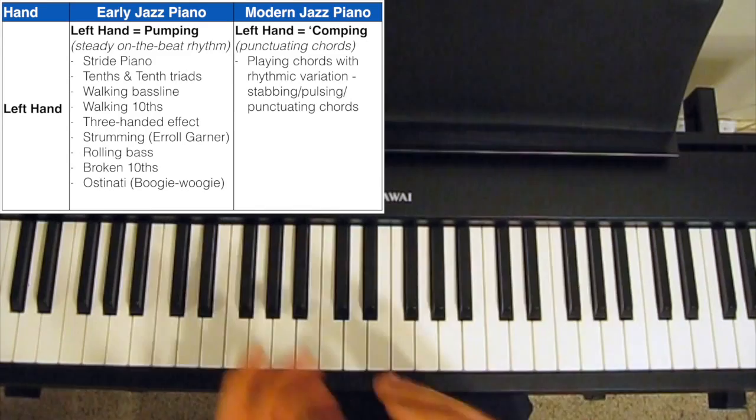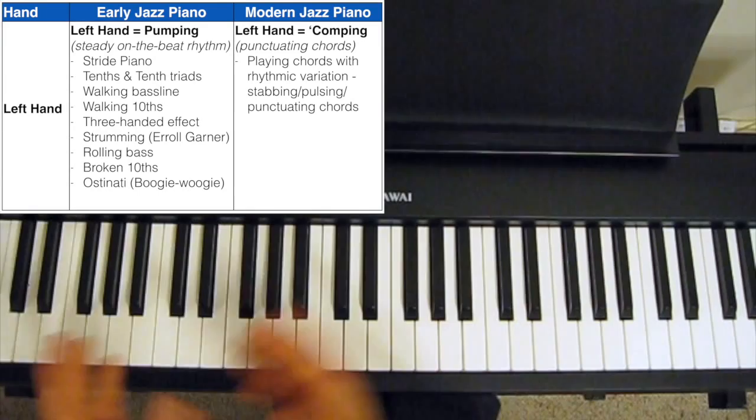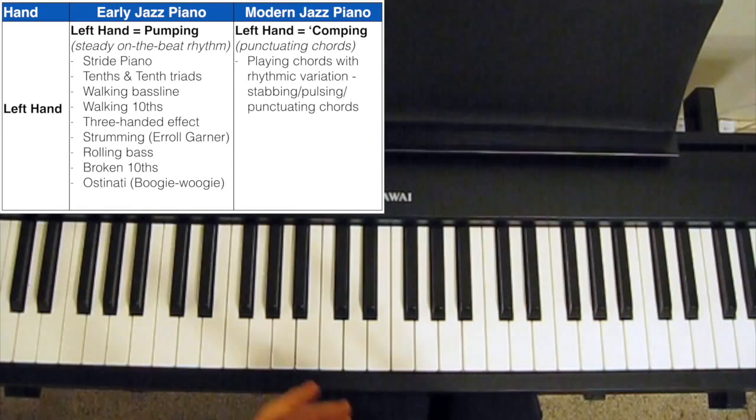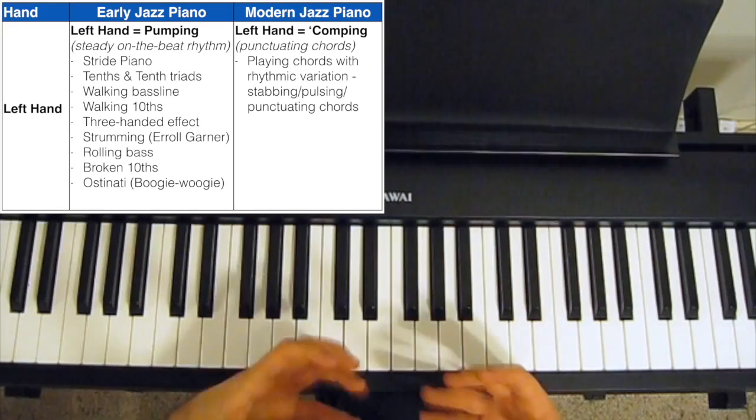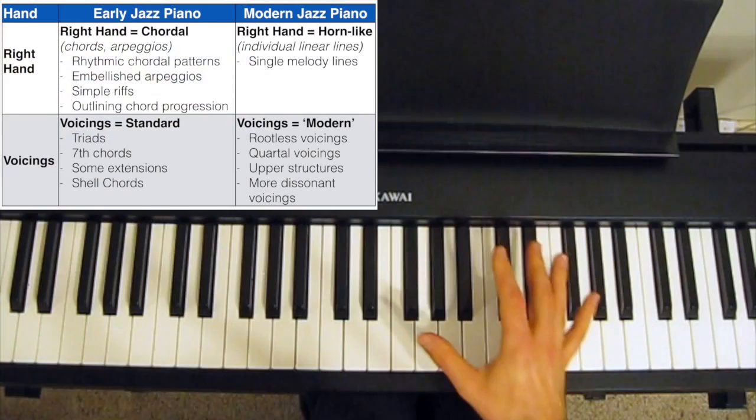And then when we get to bebop and beyond, so through hard bop and cool jazz and modal jazz, all the way to the present day, the left hand technique on the piano changed. Because, as I said earlier, the drummer and the bass player are now keeping the beat going, there's really no need for the pianist to do the same thing, to duplicate the effort. So now, modern jazz pianists, instead of playing very rhythmically and on the beat with their left hand, now use a technique called comping. That is punctuating the chords, or stabbing the chords, or pulsing the chords, to create a bit more rhythmic interest. So you're not just playing on the beat, sort of a one, two, three, four, one, two, three, four. You're doing things that are a little bit more rhythmically interesting.